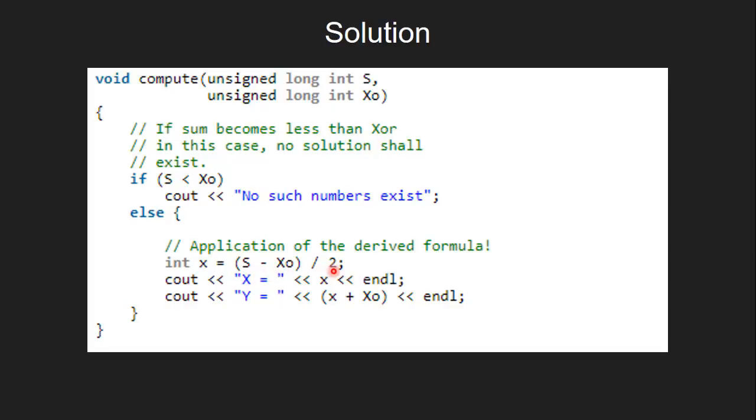If that is not the case, then we find the value of X using our derived formula (sum minus XOR) divided by 2. Once we have calculated X, we print the value of X and also find the value of Y using the derived formula Y equals X plus XOR and print the value of Y.